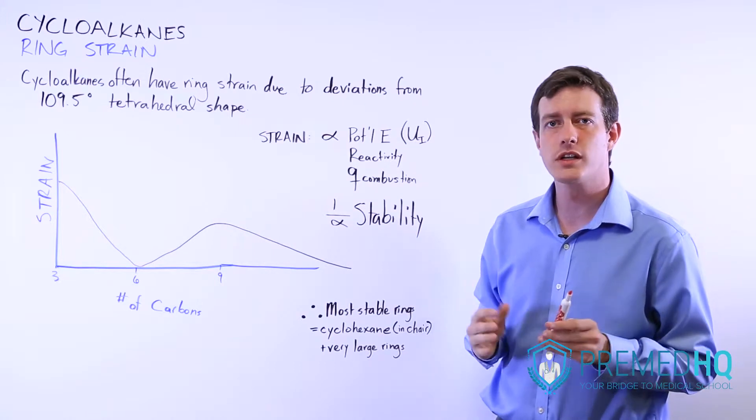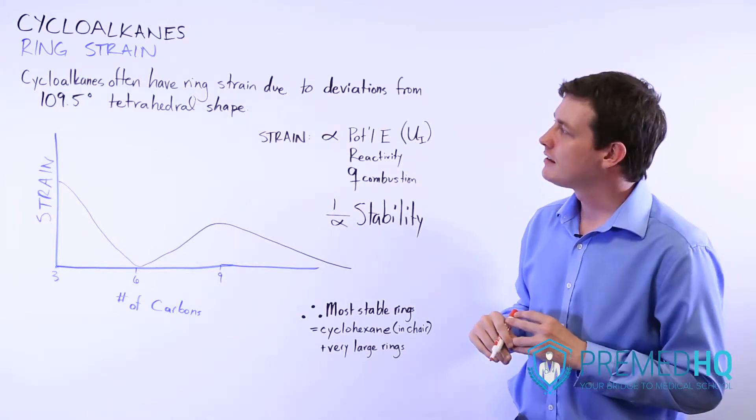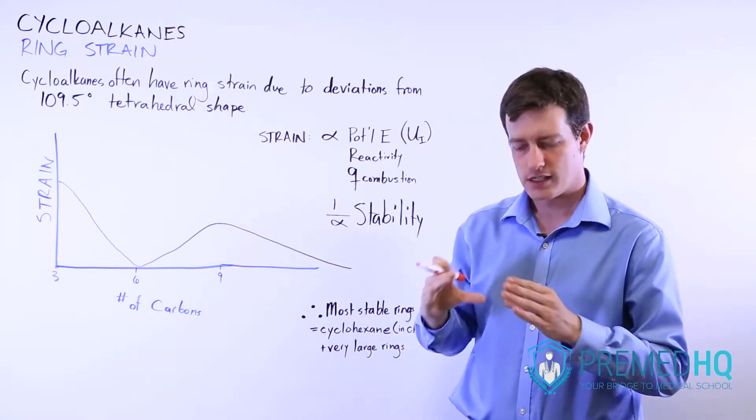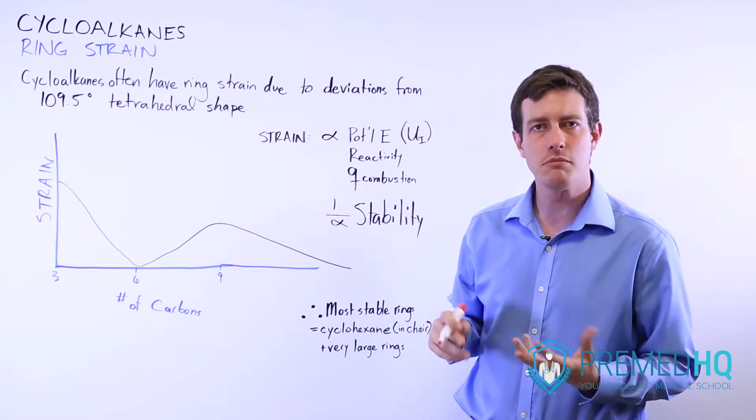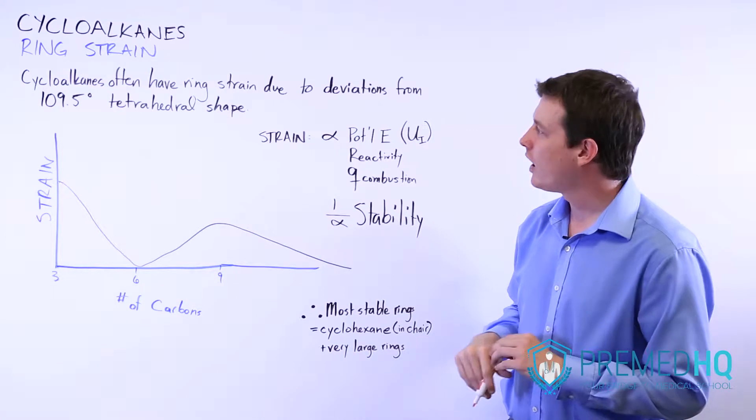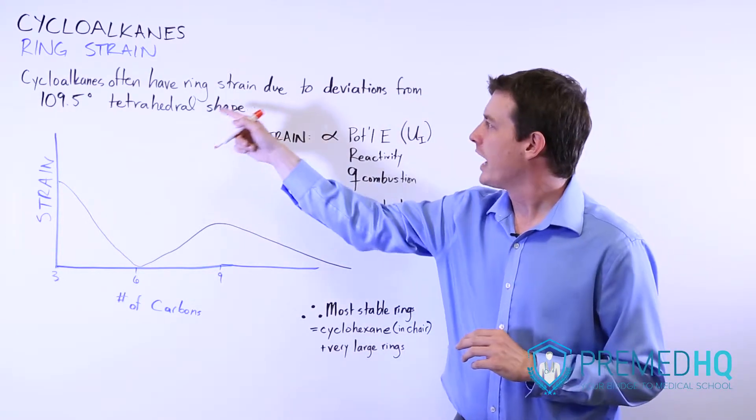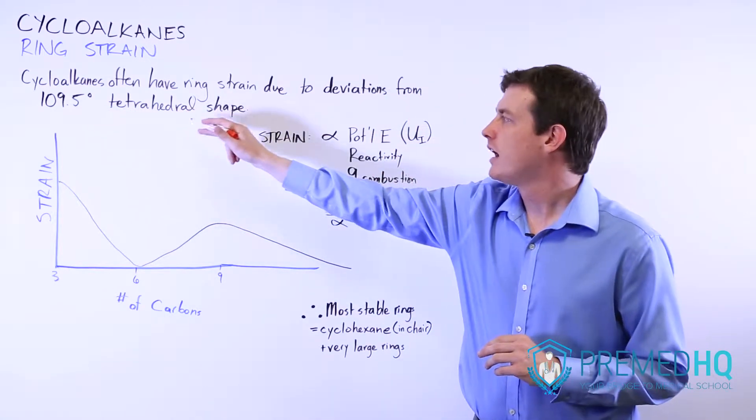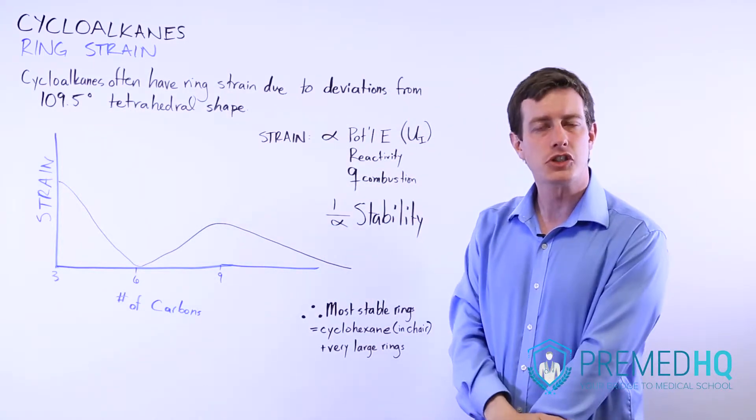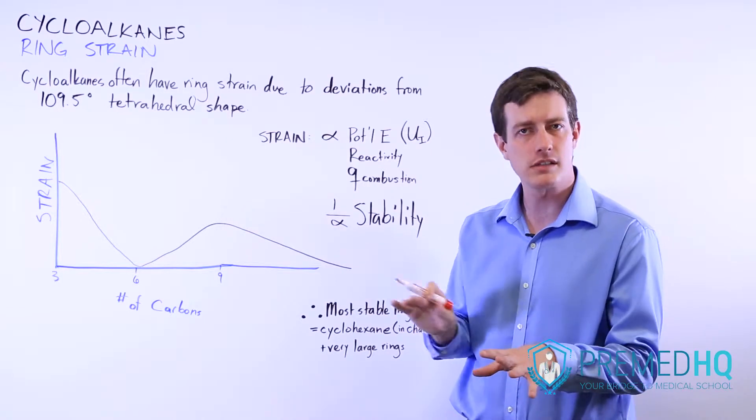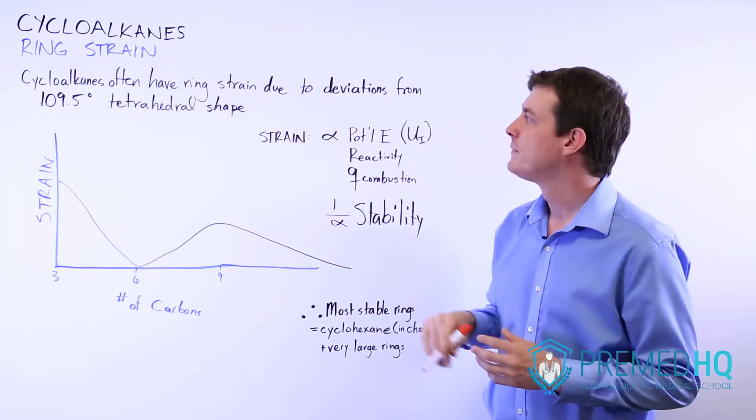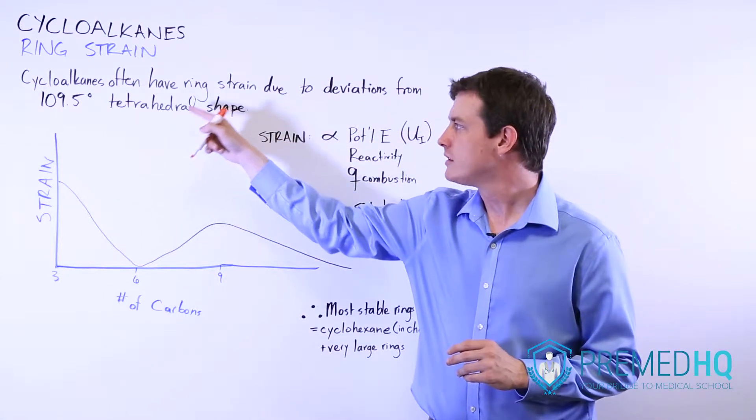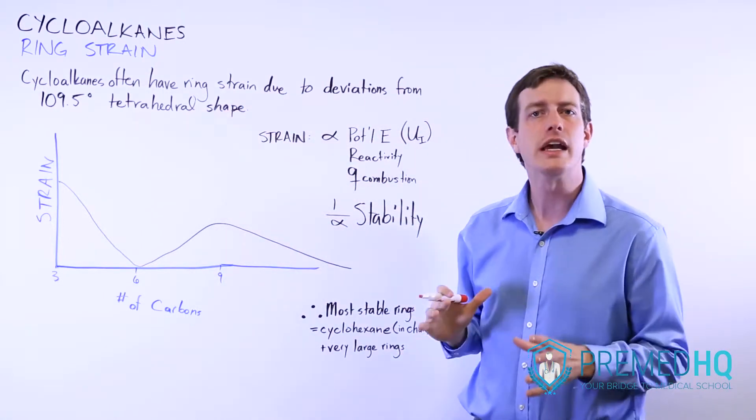One thing to be aware of when you're working with cycloalkanes is that a lot of times you'll get ring strain because you're forcing these bonds into a ringed shape, and that often requires the degree or angle of the bond to vary from the 109.5 degree tetrahedral shape that is the ideal spacing for single bonds in a carbon. And so when they deviate from this 109.5 degree tetrahedron, that creates strain.